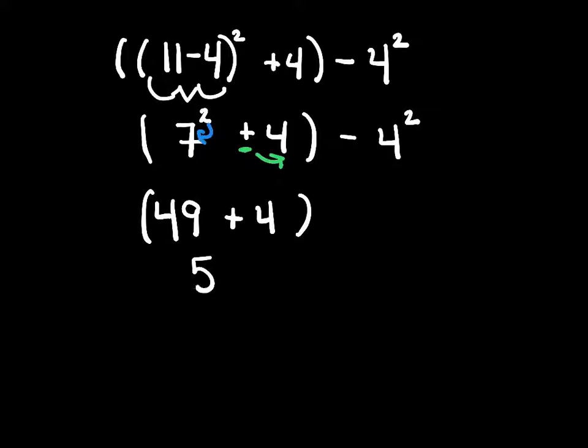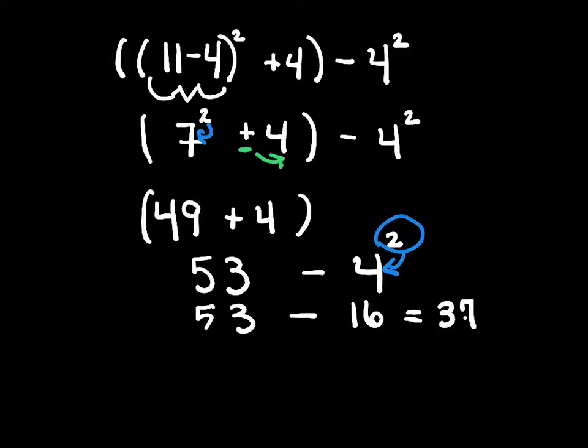49 plus 4 is 53 minus 4 squared. So now we have successfully eliminated our parentheses. We have an exponent left here, this 2, which is attached to this 4. So we need to take care of that next. Exponents come before subtraction. So we have 53 minus 4 squared is 16. So 53 minus 16 leaves us with an answer of 37.